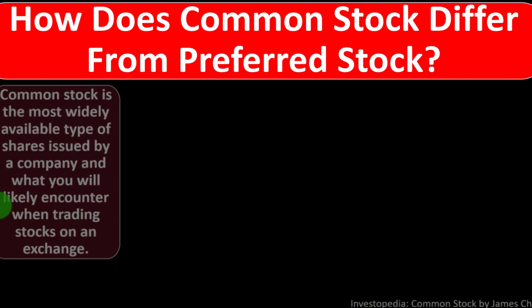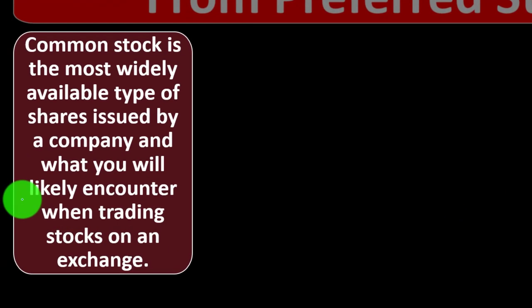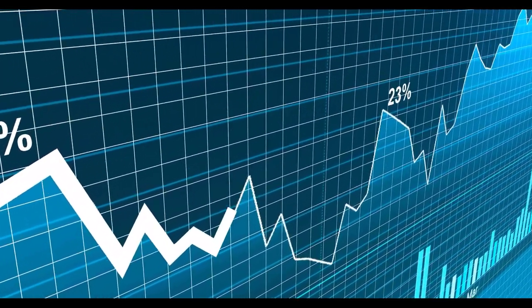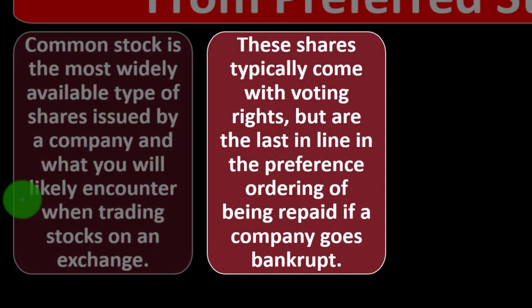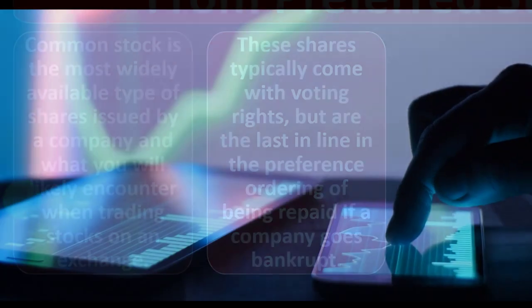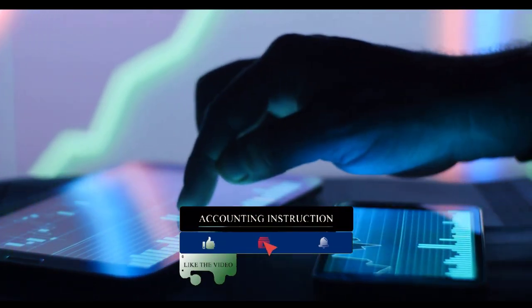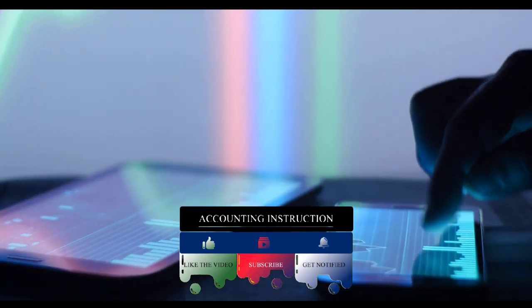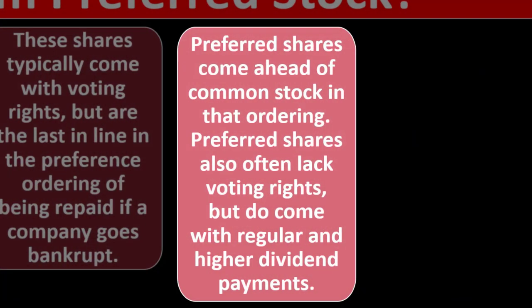How does common stock differ from preferred stock? Common stock is the most widely available type of shares issued by a company and what you'll likely encounter when trading on an exchange. These shares typically come with voting rights but are last in line to be repaid if a company goes bankrupt. You have a claim to equity, but you're last in line during liquidation. Preferred shares come ahead of common stock in that ordering.